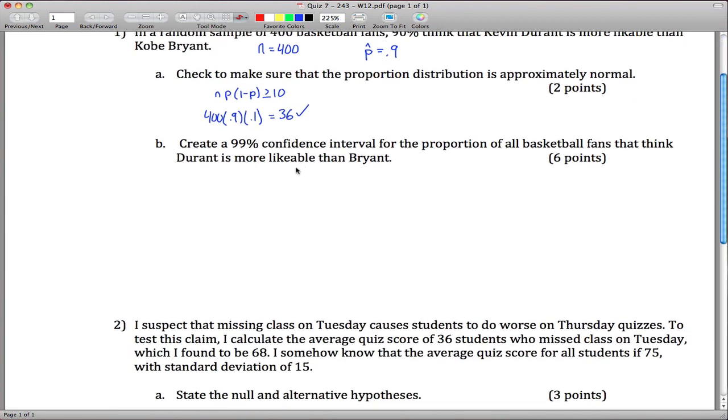On to the main part of the problem: create a 99% confidence interval. So for a confidence interval, you need a point estimate, and then from that you need to add or subtract some number, this many standard deviations.